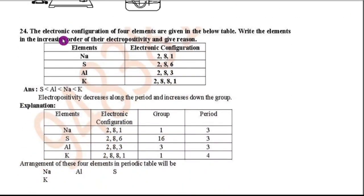24th question. The electronic configuration of four elements are given in the below table. Write the elements in the increasing order of their electropositivity and give reason. So here they have given sodium, sulfur, aluminum and potassium. So by seeing the table easily you can understand which is having high electropositivity and which is having less positivity. Because in the periodic table we know that along the period the electropositivity is decreasing. But along the group it is going on increasing. So sulfur, then aluminum, sodium and potassium. So this is the order.